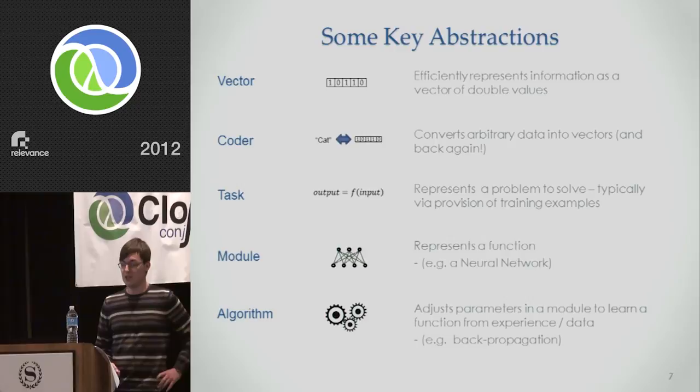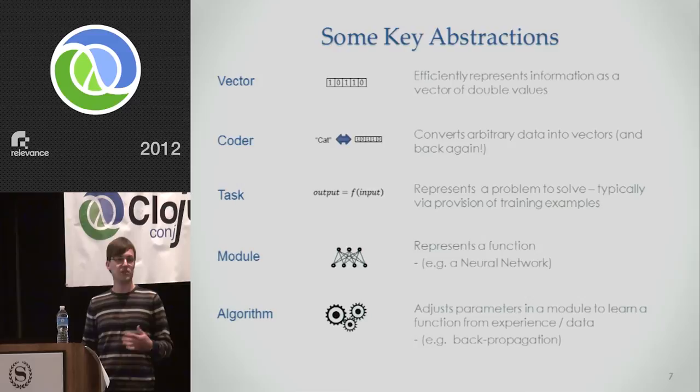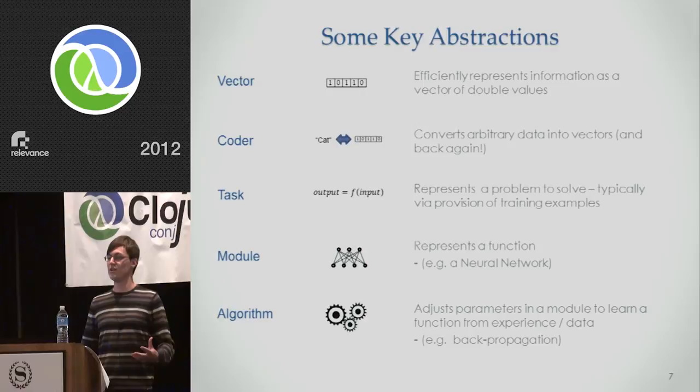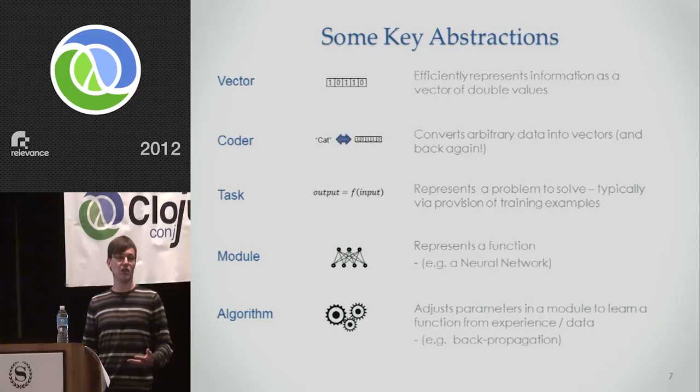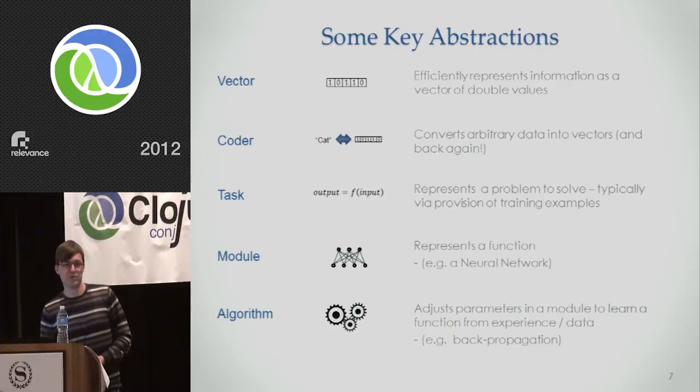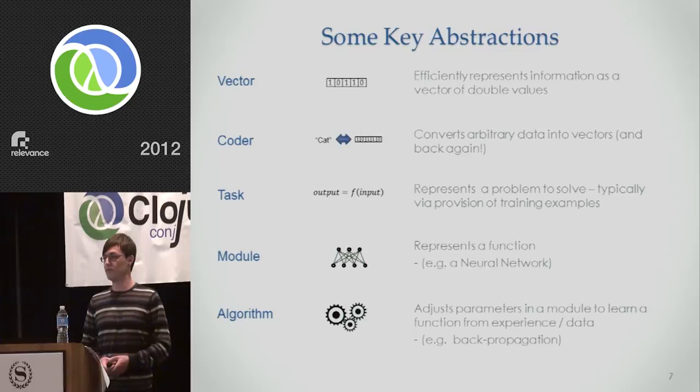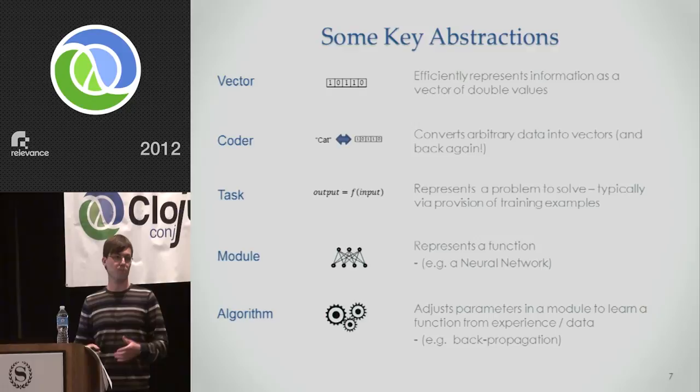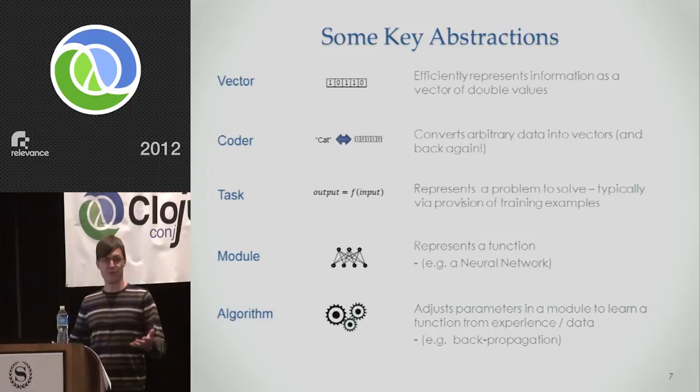So with that said, I'd just like to introduce a few of these abstractions. First of all, there's the humble vector. The vector is basically an array of double values, and this is what we're going to use to represent inputs and outputs to our algorithm. In the real world, your data is not going to come nicely pre-formatted in vectors. So you need a coder. This is something which will convert data to a vector and back again as needed. You also need to describe the problem that you're trying to solve. This is the task. That encapsulates all of the training data that you need to use. The module is what represents the function which is being learnt. Typically, that would be a neural network. And finally, there's an algorithm. The algorithm is what actually makes the learning work. It's what actually builds the function to solve that particular problem.